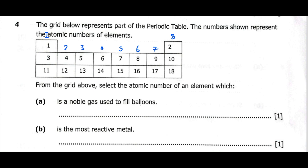Now let's look at the questions from the grid. Select the atomic number of an element which is a noble gas used to fill a balloon. What noble gas is used to fill a balloon? That is none other than helium. One of the uses of helium is to fill up balloons. The atomic number for helium is 2.